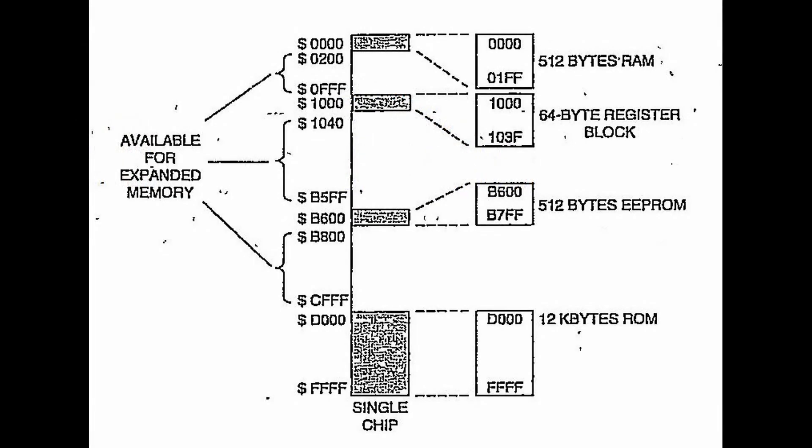For all microprocessors, there's a memory map. This shows what is attached to the bus, but also what is the hexadecimal number of the device. Everything is done in hexadecimal in microprocessors.